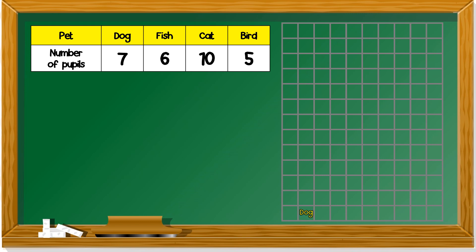Dog. How many? Seven, right? Fish. Six. So, you color six boxes.